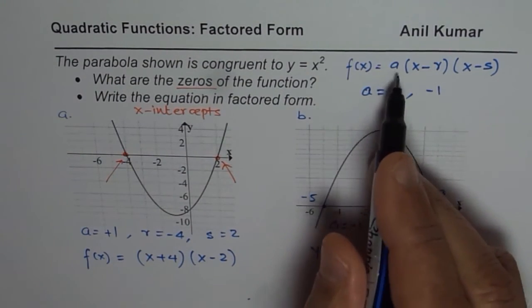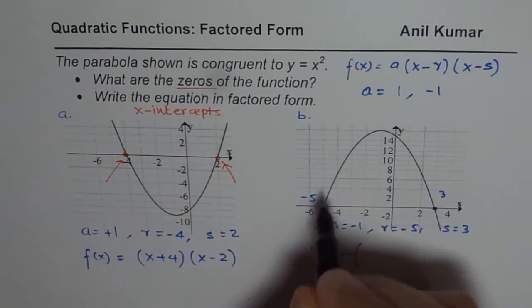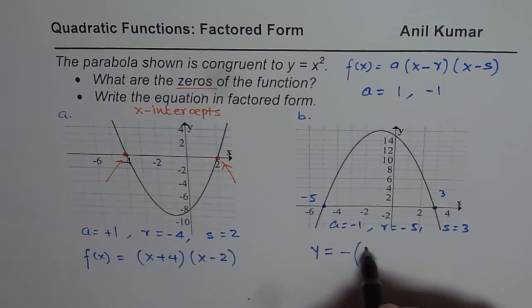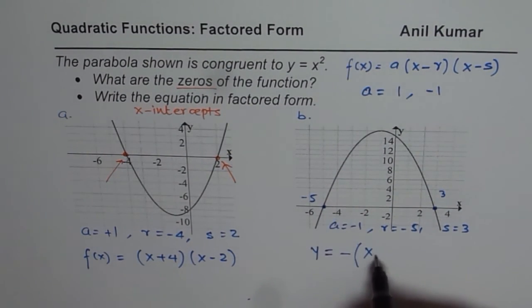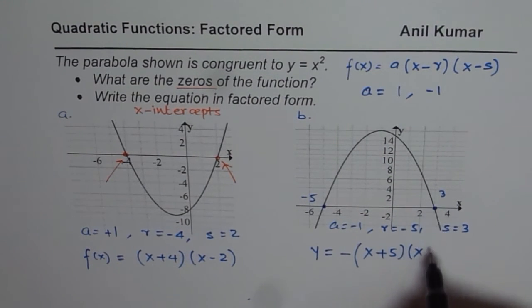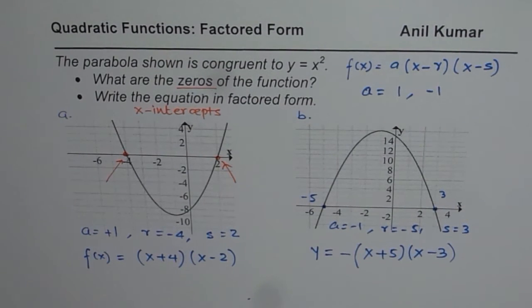We get minus for A, right? Parabola opening downwards, it has to be negative. And x using the first x intercept, we get plus 5 times x minus 3. So that becomes the equation in the factored form.